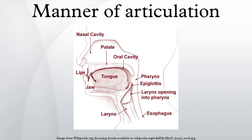Individual manners — Stop: an oral occlusive where there is occlusion of the oral vocal tract and no nasal airflow, so the airflow stops completely. Examples include English /p, t, k/ and /b, d, g/. If the consonant is voiced, the voicing is the only sound made during occlusion. If it is voiceless, a stop is completely silent. What we hear is the effect that the onset of the occlusion has on the preceding vowel, as well as the release burst and its effect on the following vowel. The shape and position of the tongue determine the resonant cavity that gives different stops their characteristic sounds. All languages have stops.